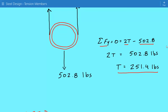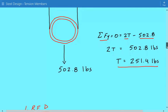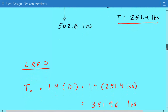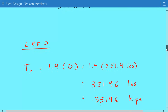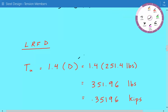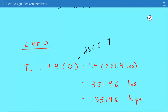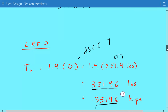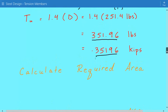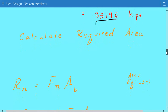Now we begin the LRFD solution. The first step is to calculate the factored load based on ASCE 7 load combinations. Since we only have a dead load, we use load combination 1: 1.4 × D = 1.4 × 251.4 lb = 351.96 lb = 0.35196 kips.